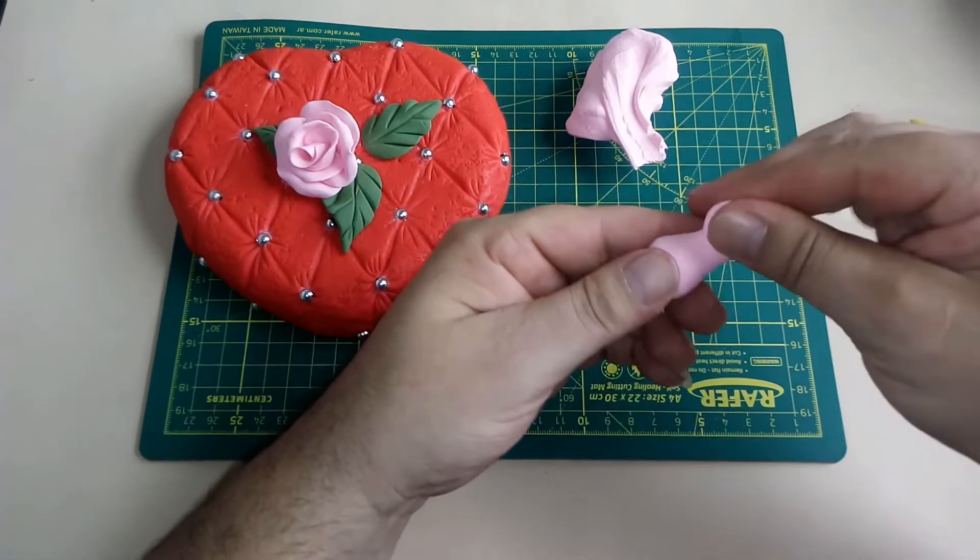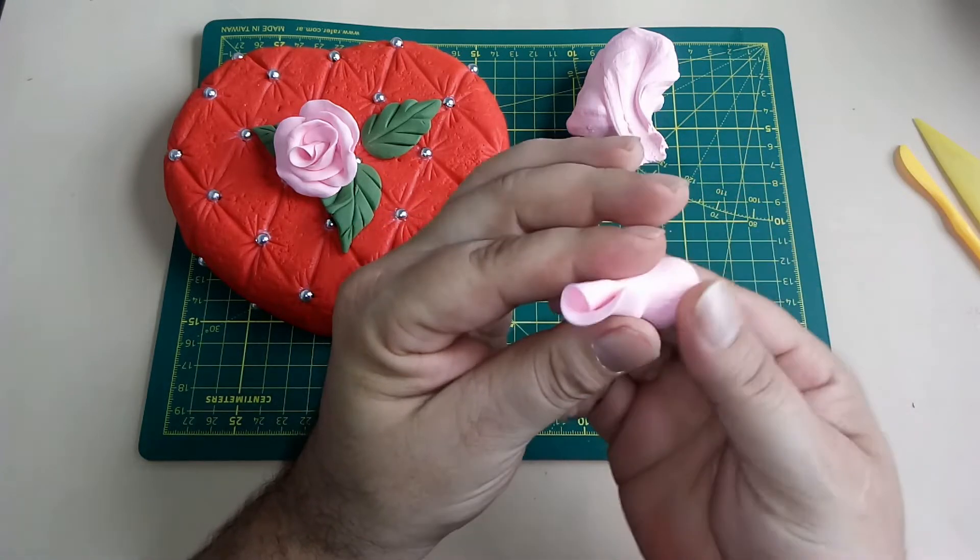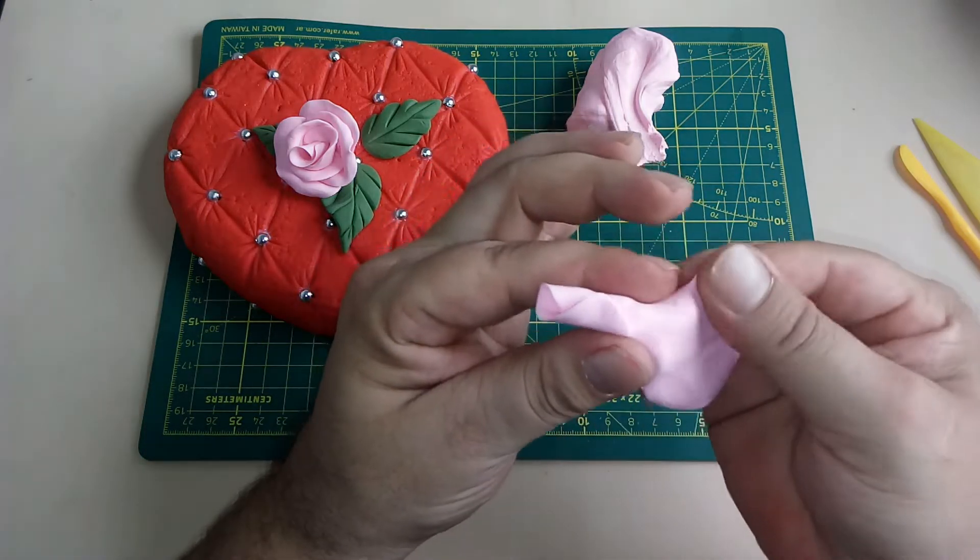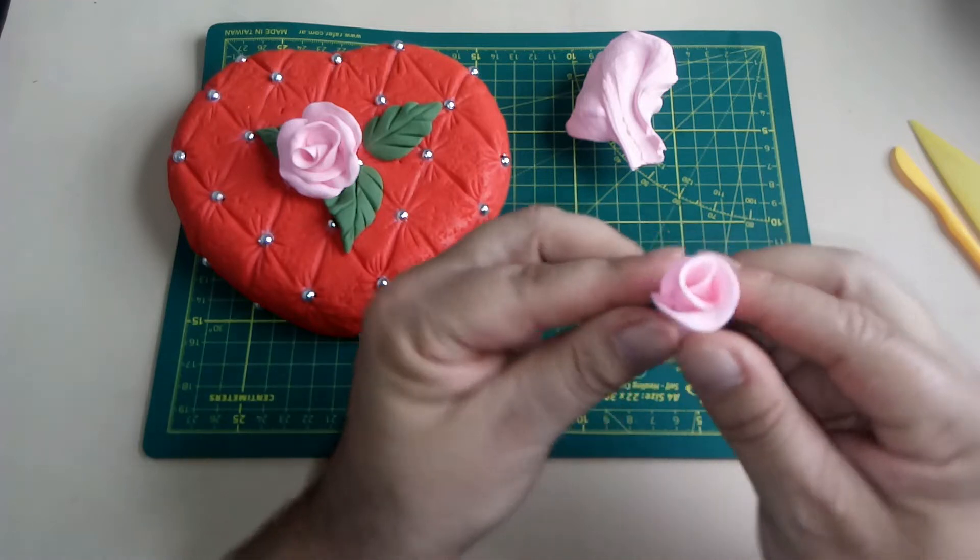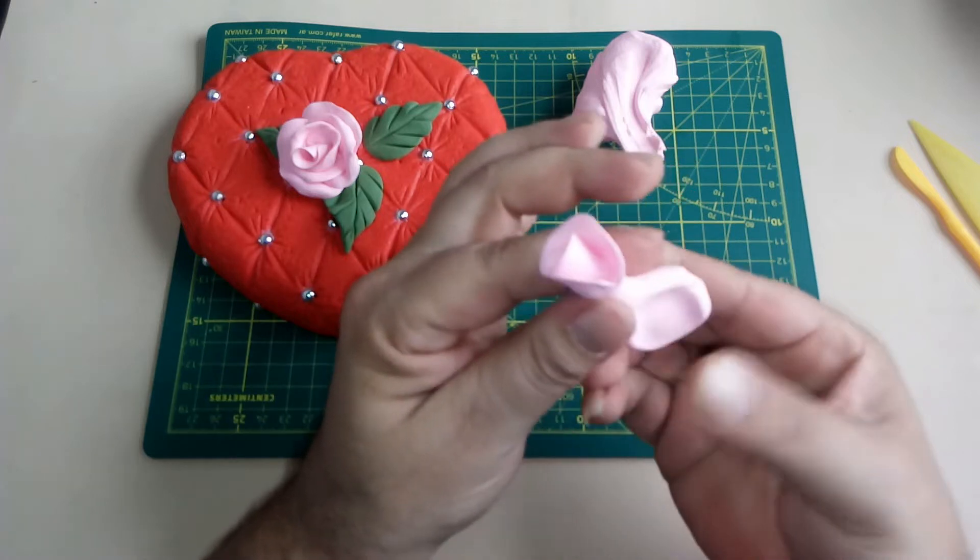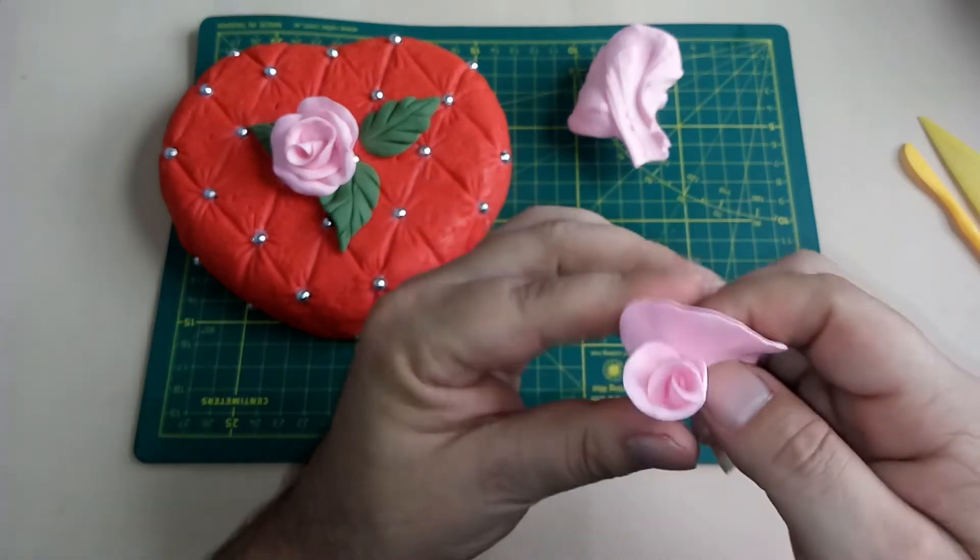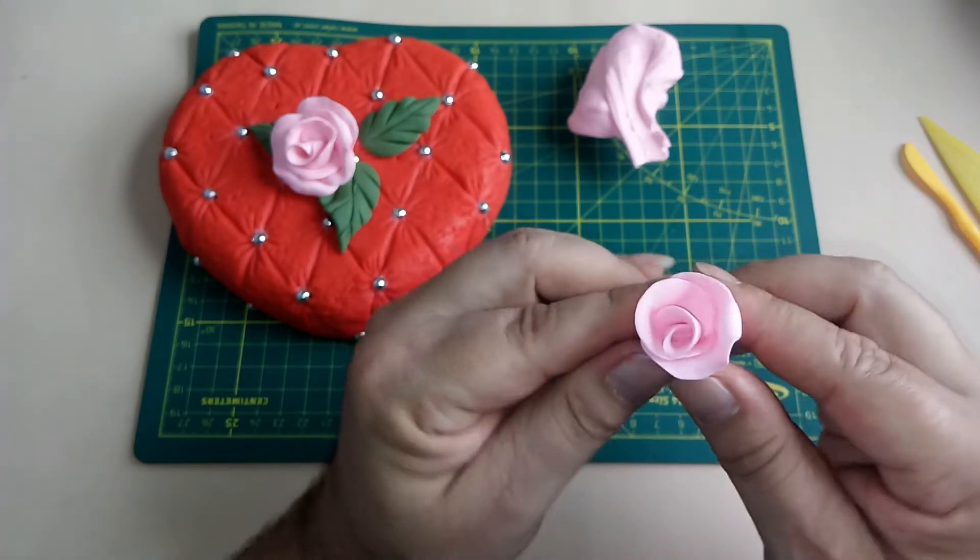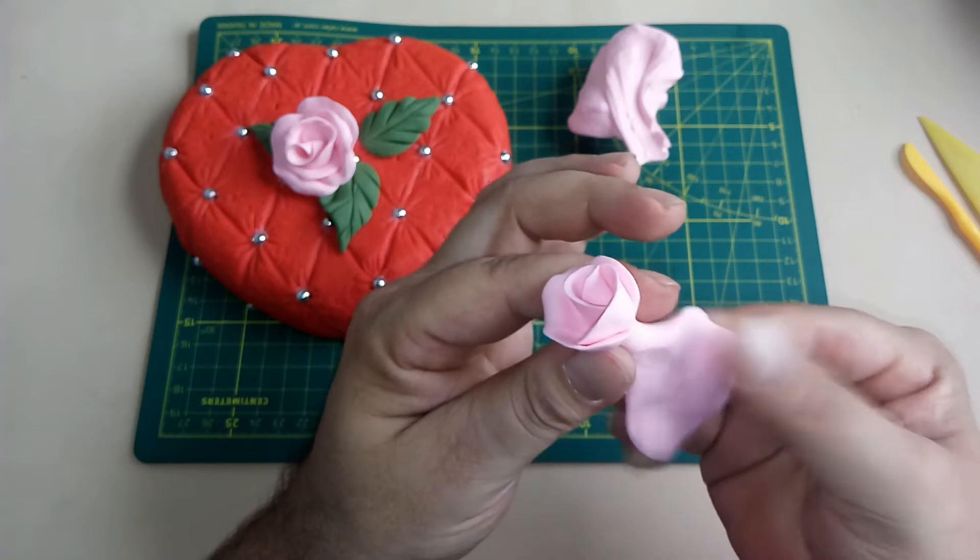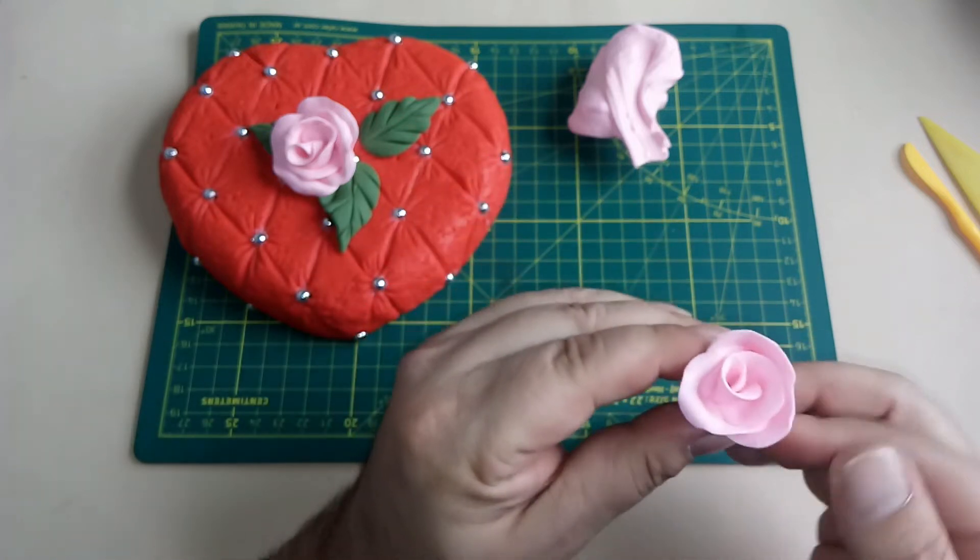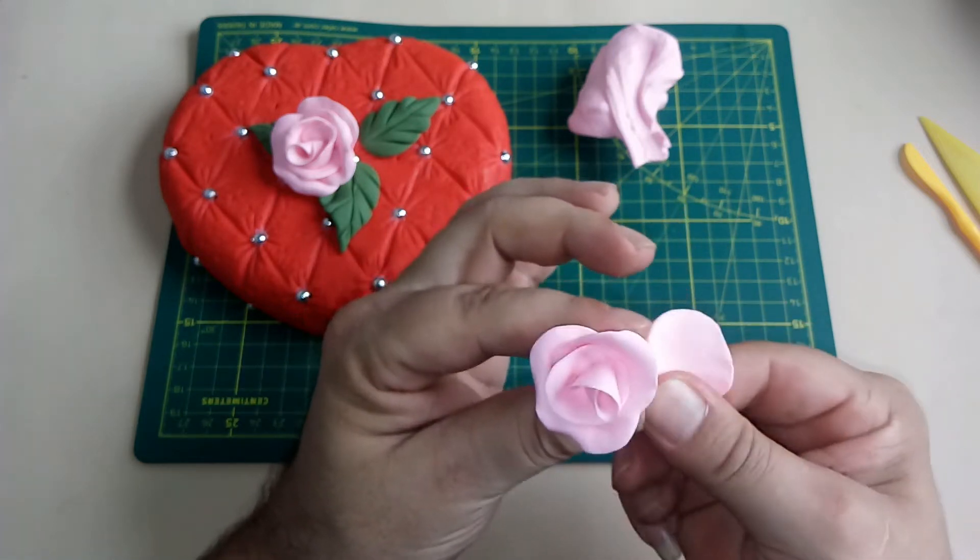Bola, separo, y presiono, bien finito el borde, enrosco sobre sí mismo, y preparo el pétalo de abajo. Donde tengo el cruce final, ahí superpongo, envuelvo, y le voy dando movimiento. Afino, presiono, afino bien el borde, y donde tengo el cruce, subo, envuelvo, y le doy forma al pétalo. Afino, presiono, subo, y de esta forma voy generando mi flor.